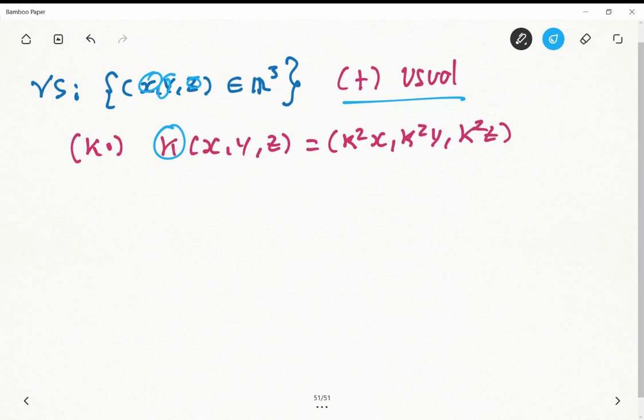So this scalar multiplication, in this case, is defined as follows. We take k multiplying the vector, and what happens is that inside appears k squared.